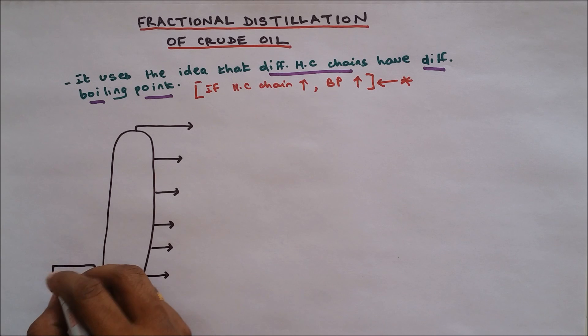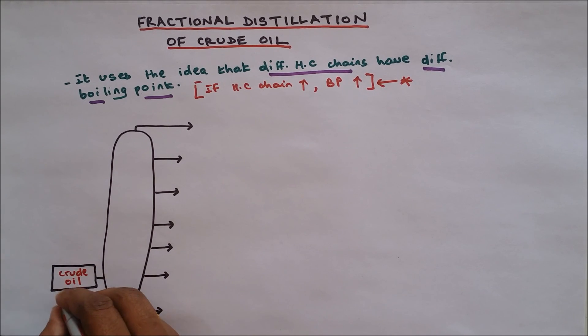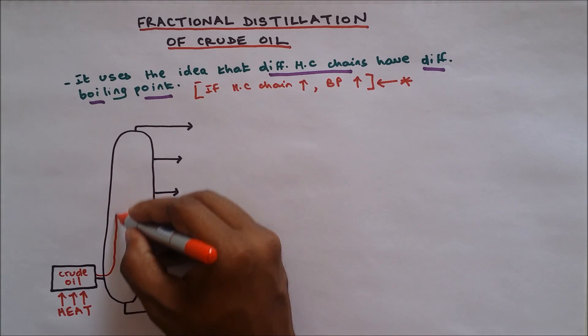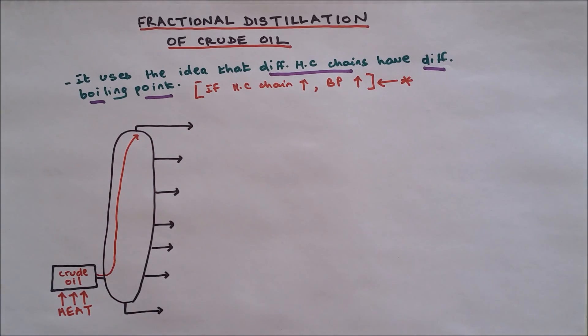Now what we have over here is crude oil which is heated up at very high temperature. So what will happen? The small chains which have a low boiling point will start to rise up to the top.